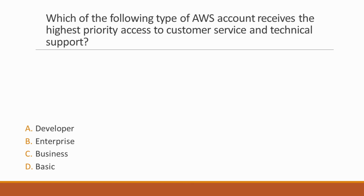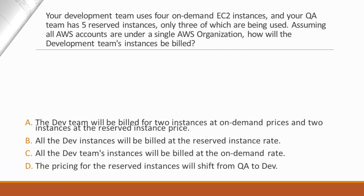Next question: Which type of AWS account receives the highest priority access to customer service and technical support? Options: A. Developer, B. Enterprise, C. Business, D. Basic. Correct answer is option B, Enterprise, because enterprise accounts have the highest priority of access to customer service and technical support.